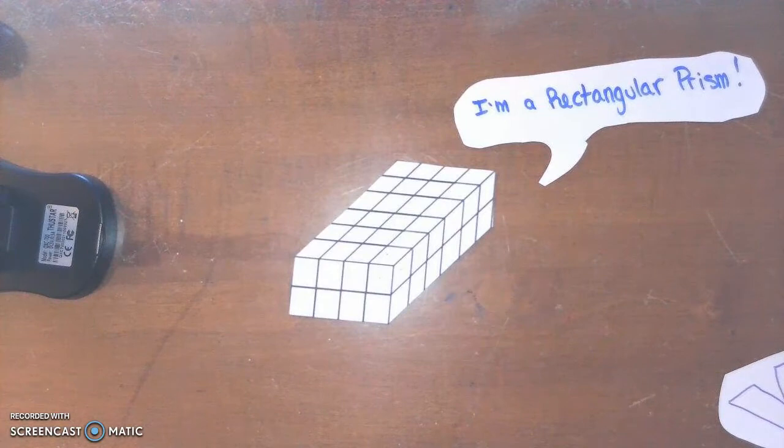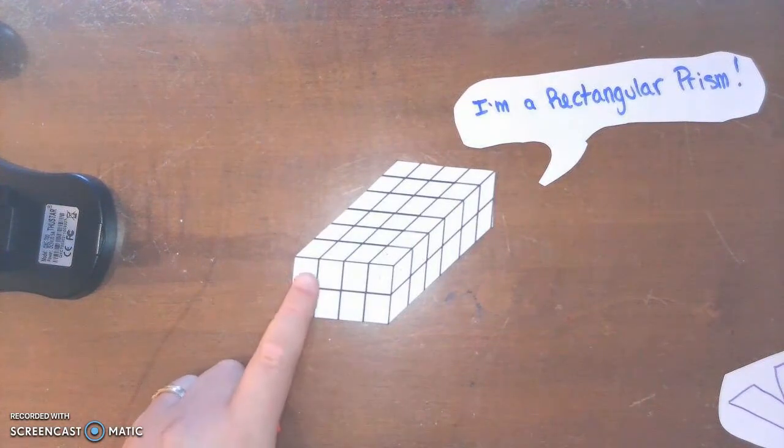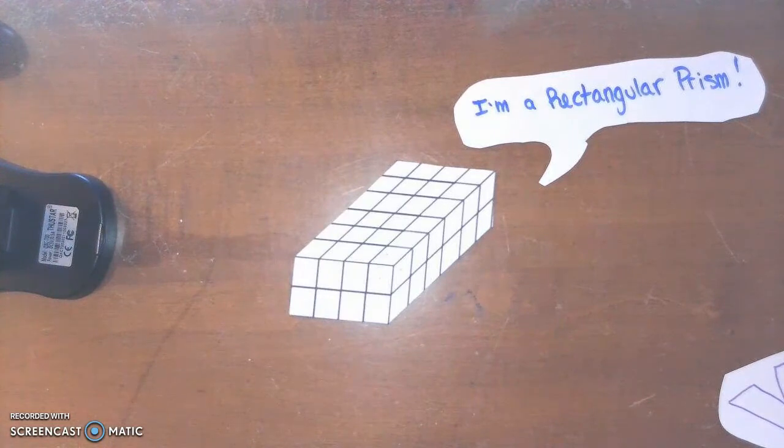Another important skill for students to have is to be able to see layers of cubes. So I'm going to show three different ways that I chose to show the layers or possible layers that can be seen in this rectangular prism.